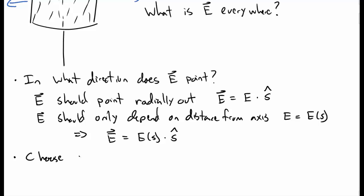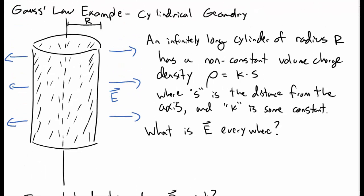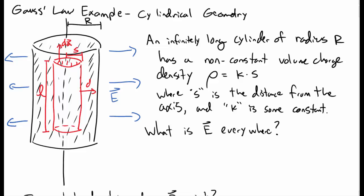Now we need to choose a Gaussian surface. A natural Gaussian surface is, of course, a cylindrical Gaussian surface, because that matches the symmetry we have. Let's first consider inside the cylinder — we draw a Gaussian surface of length L and radius s. It has dA vectors for the top, the side, and the bottom, pointing outward.